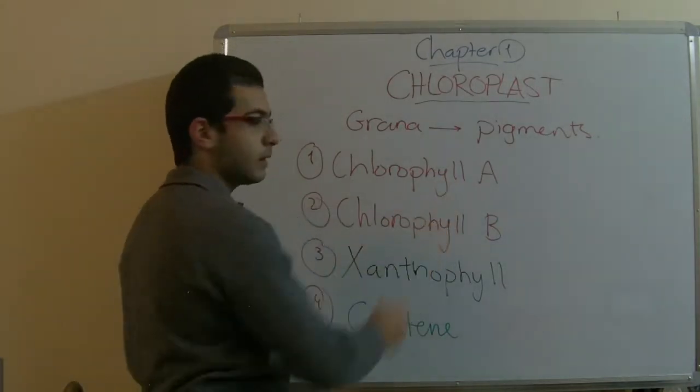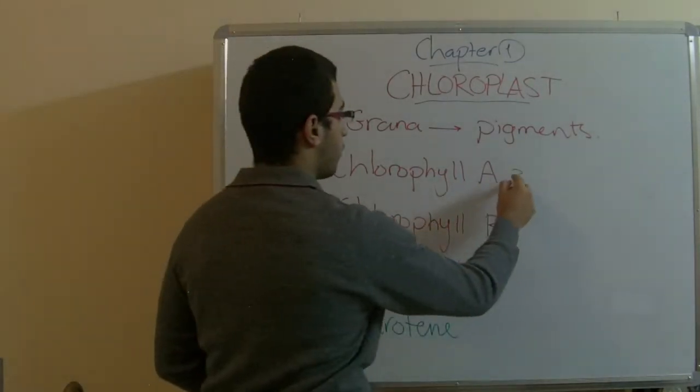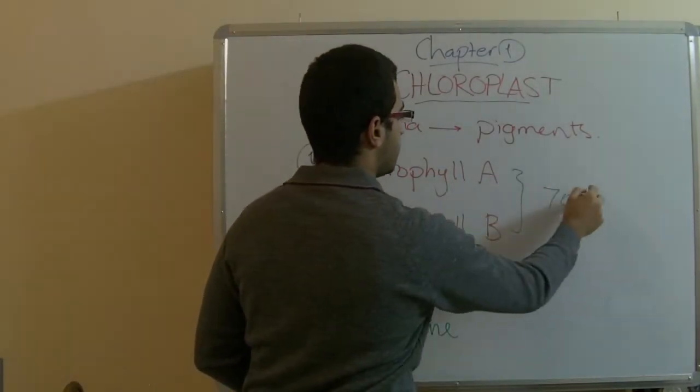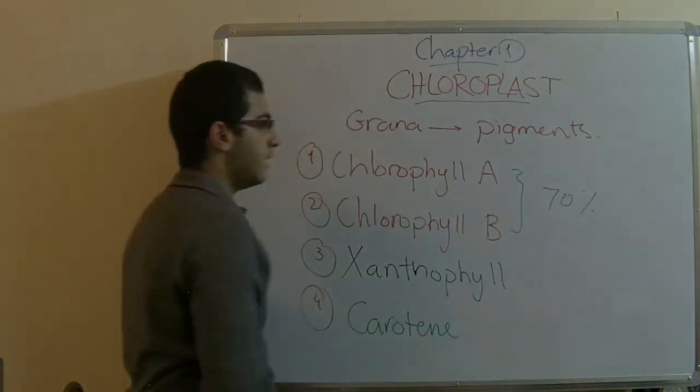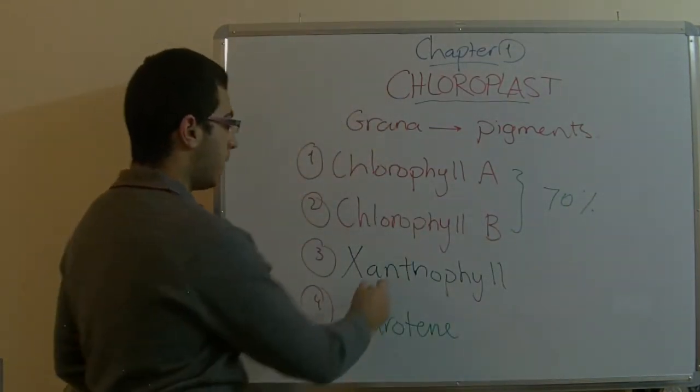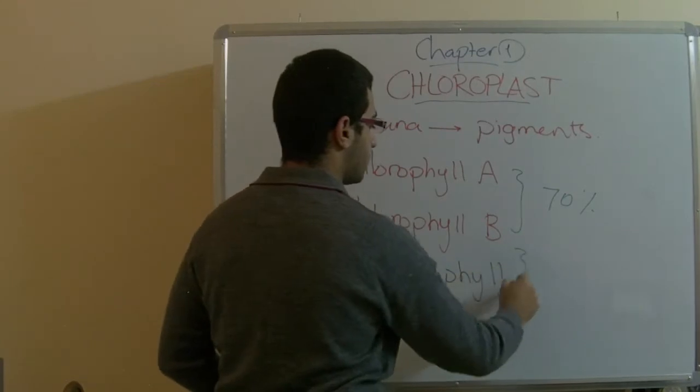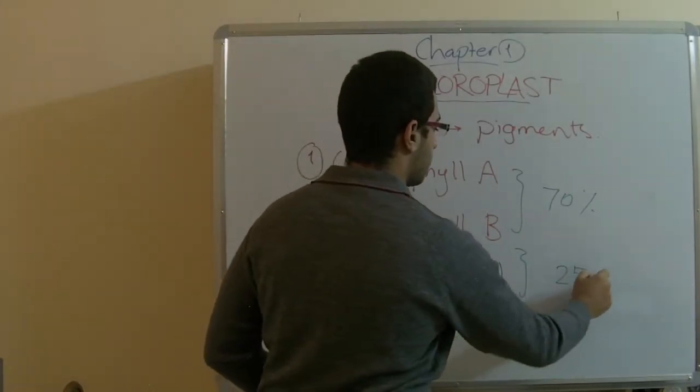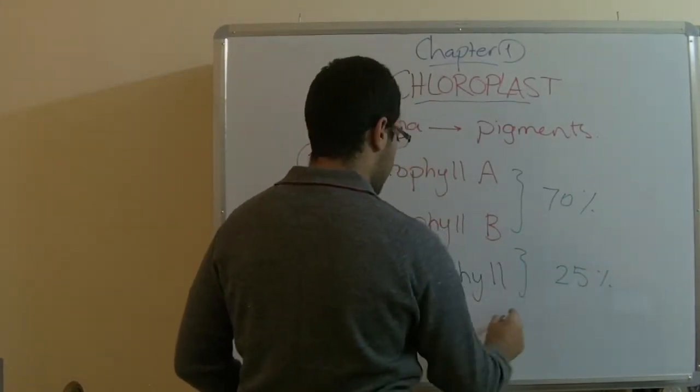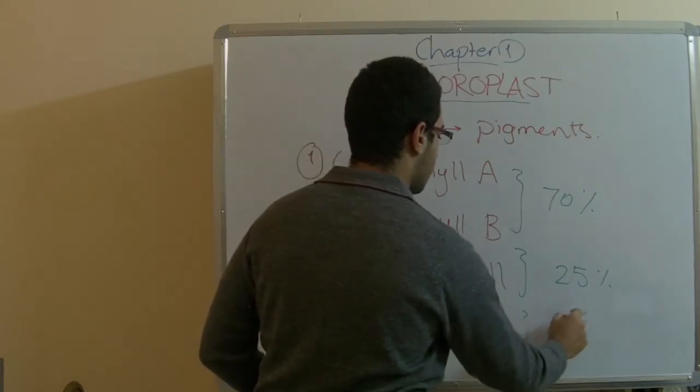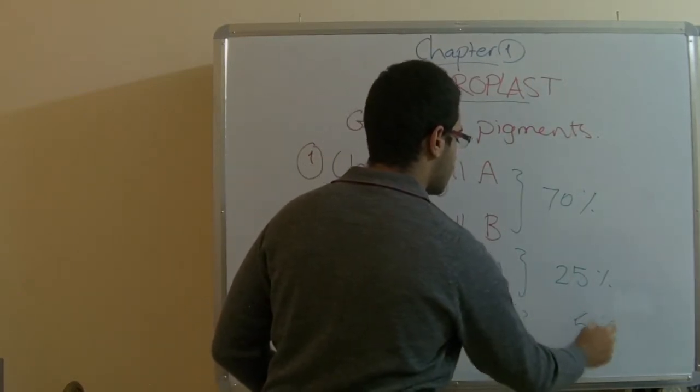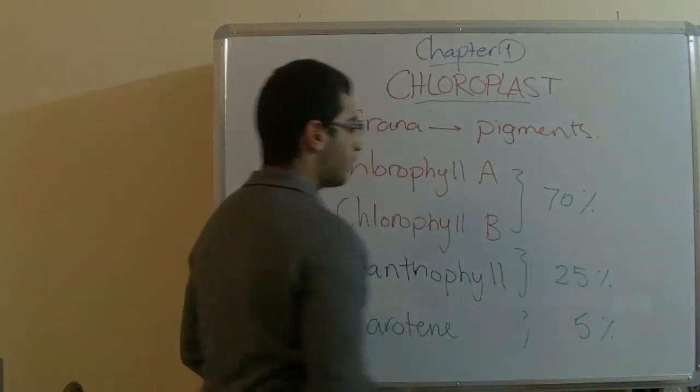So chlorophyll A and chlorophyll B together form 70% of the pigments in the grana, xanthophyll forms 25%, and carotene forms only 5%, so the sum is 100%.